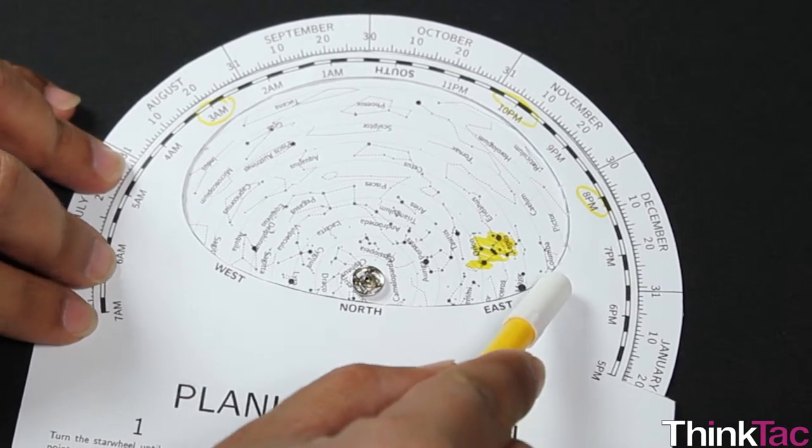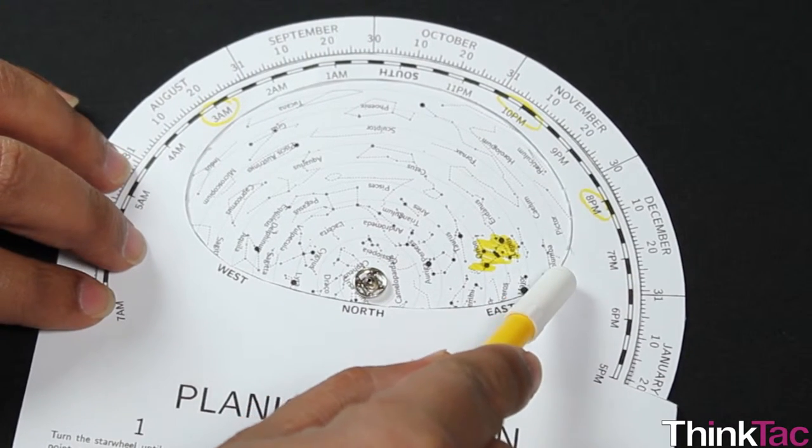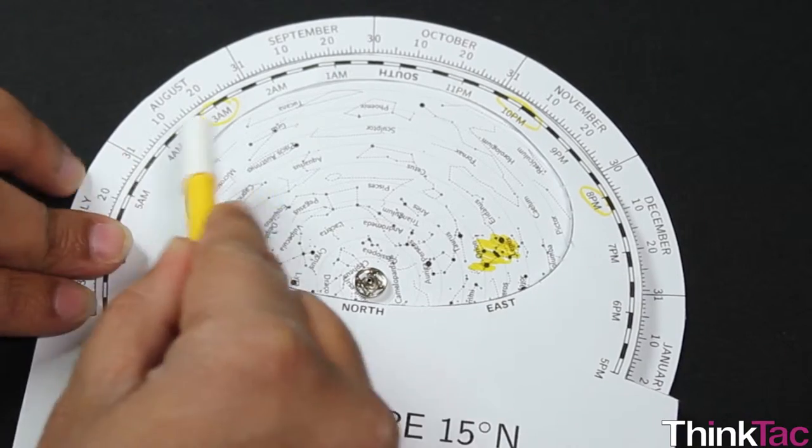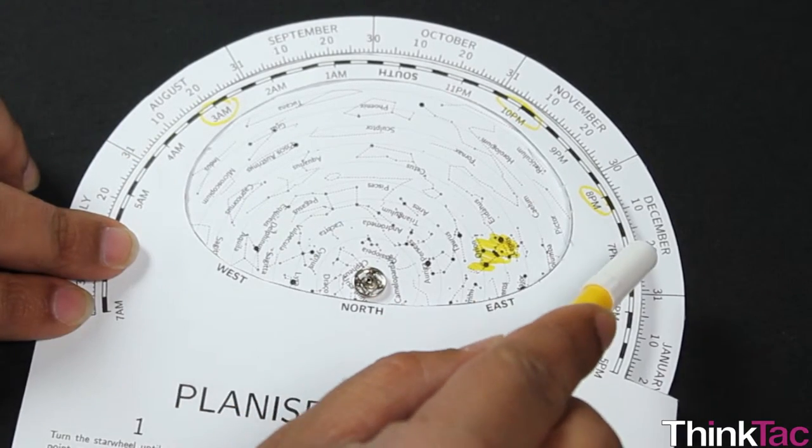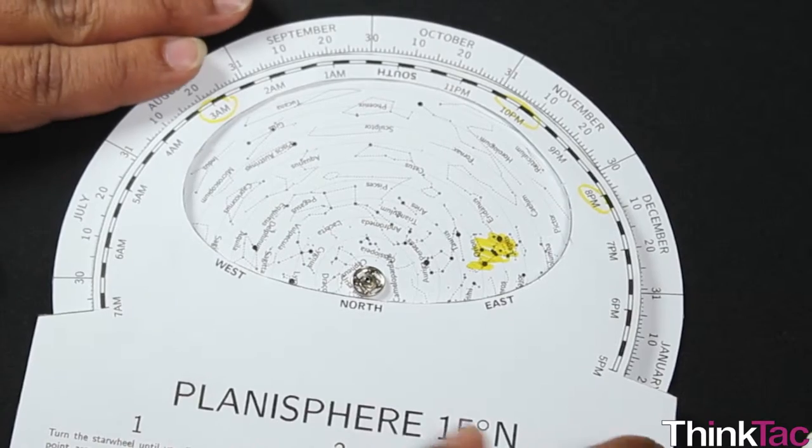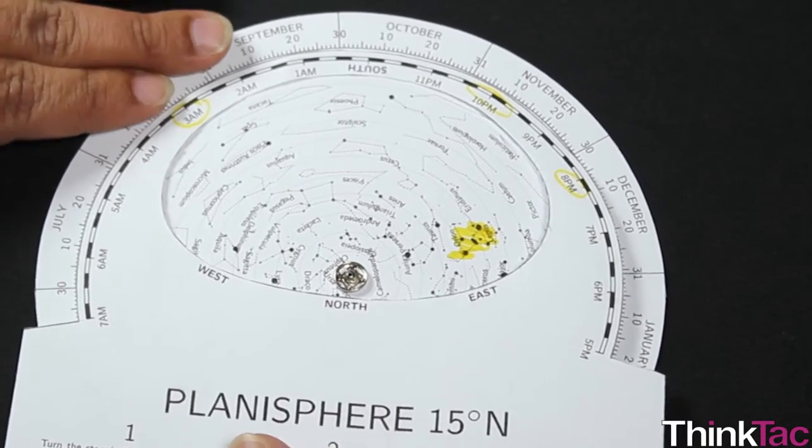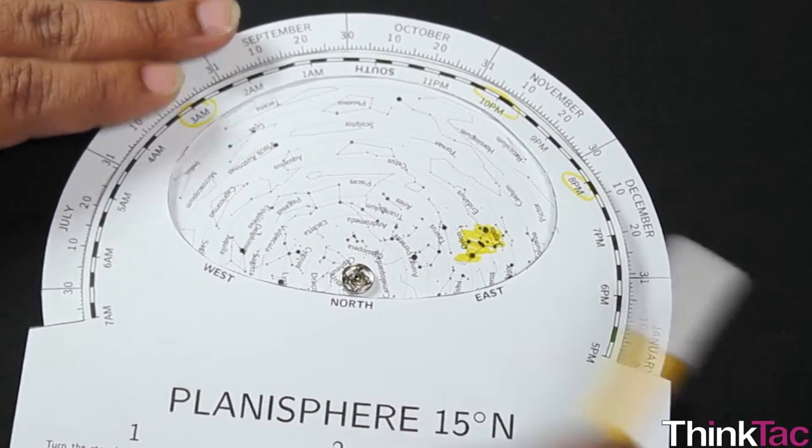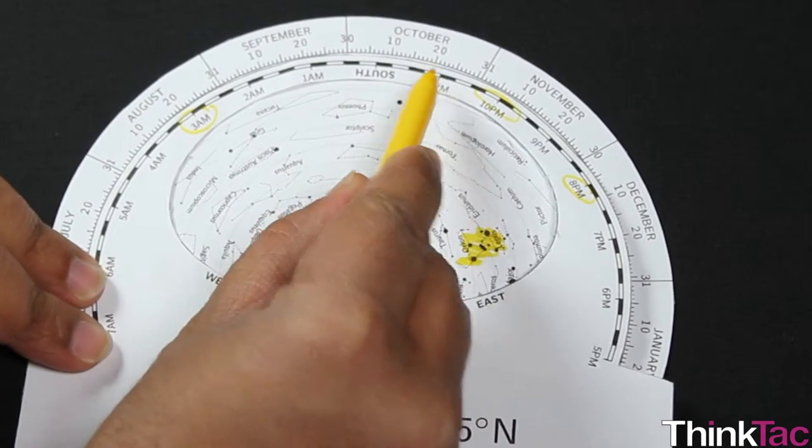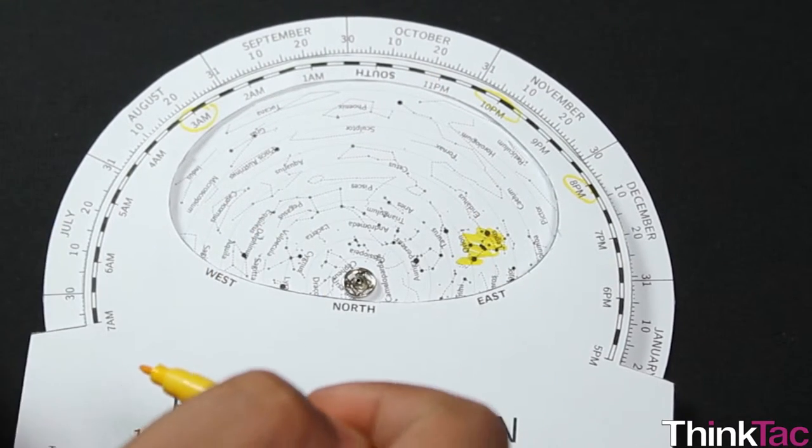We call it a winter constellation because it so happens to rise in the eastern sky at about the same time that the sun is setting in the months of December, January, February and even earlier. For example, if I look at the October sky at 11 o'clock, it's when Orion is rising.